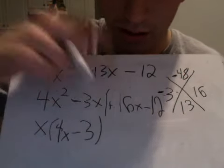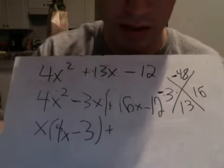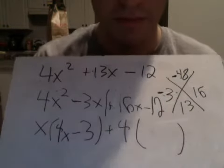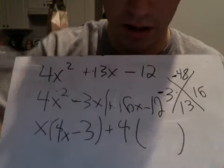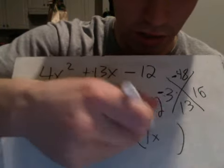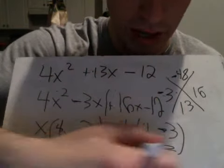Over here, I'm seeing, well, it's going to be a plus because my third term is plus. The greatest common factor is 4. And then the biggest number, the number that will go here, should be 4x minus 3 also. If I'm doing it right, I should get bubbles that match.